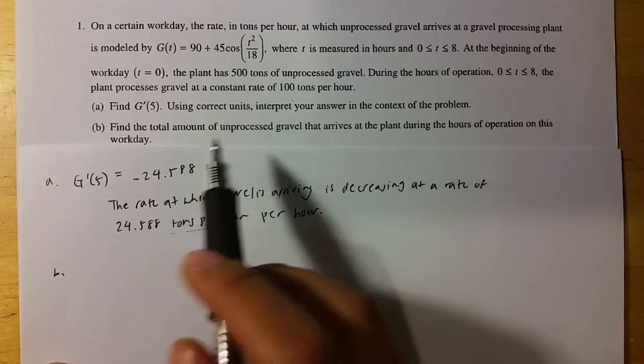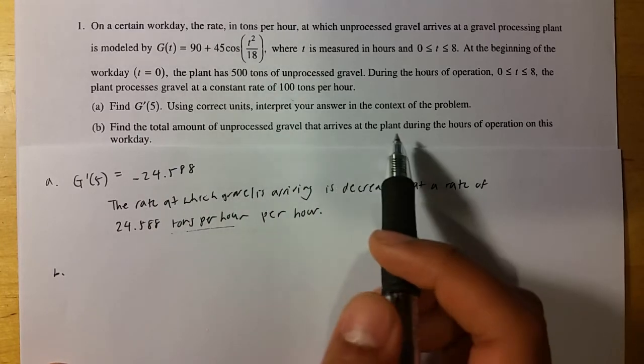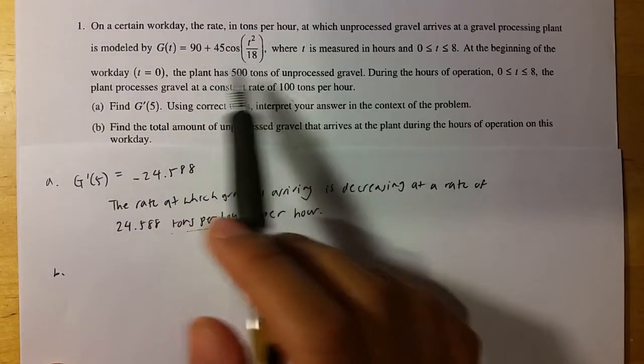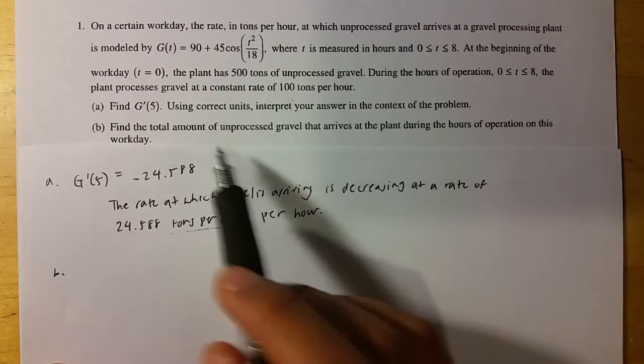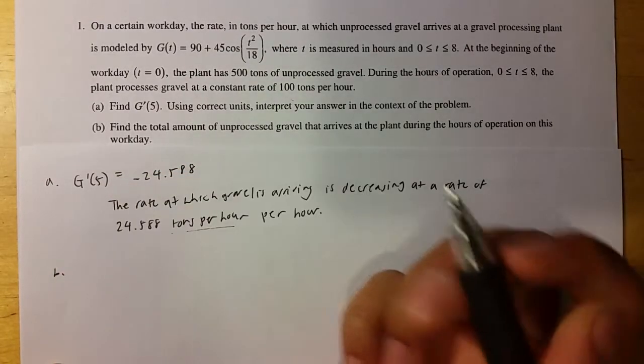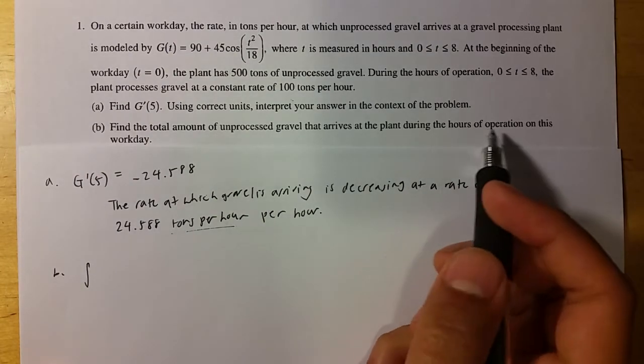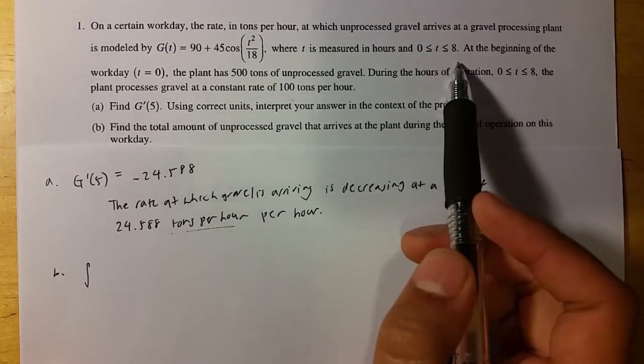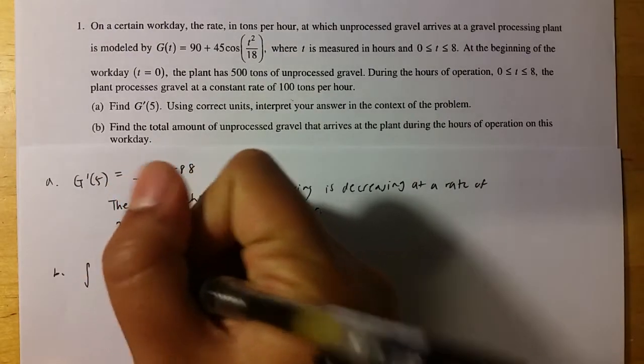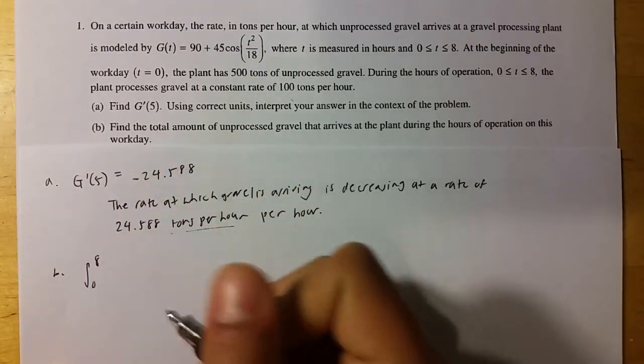Part B deals with the total amount of unprocessed gravel that arises. So if this is the rate at which it arrives, then you know that the total is just a sum. And to find the sum, you do an integral. And it says during the hours of operation. The hours of operation are from 0 to 8.